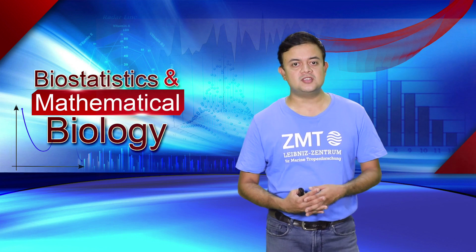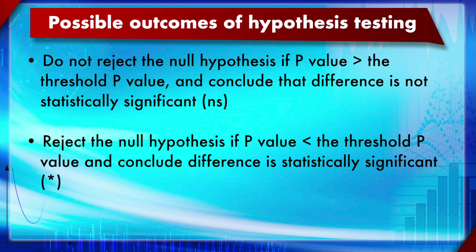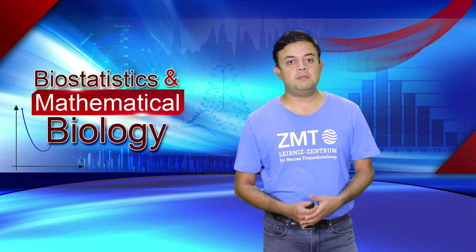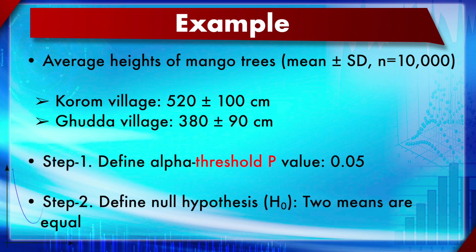There are two possible outcomes of hypothesis testing. First: do not reject the null hypothesis if the obtained p-value is higher than the threshold p-value (alpha, usually 0.05). Second: reject the null hypothesis if your p-value is less than the threshold — what most researchers aim for. The conclusions are only about the null hypothesis, because statistical hypothesis testing only tests the validity of the null hypothesis.